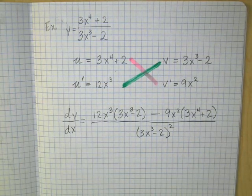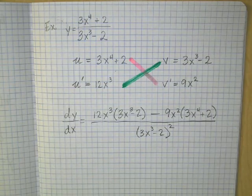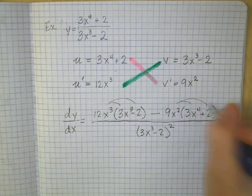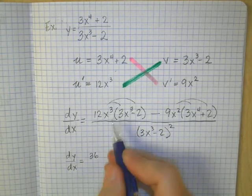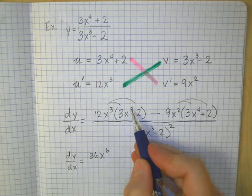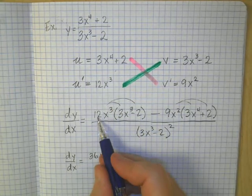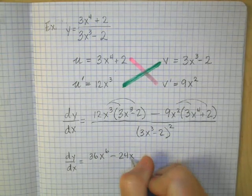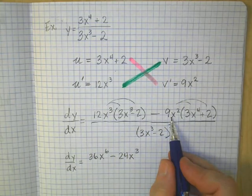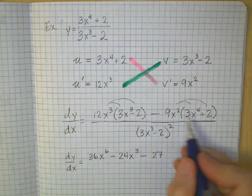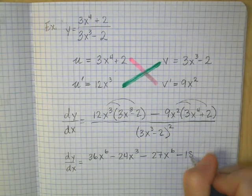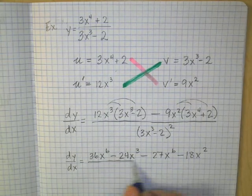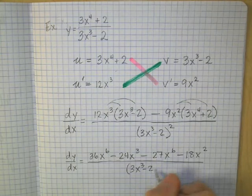Now we can simplify this — let's go ahead and multiply out and simplify. Distributing the numerator: dy/dx equals 12 times 3 is 36, x cubed times x cubed is x to the sixth. Then 12 times negative 2 is negative 24, keep x cubed. Over here, negative 9 times 3 is negative 27, x squared times x to the fourth is x to the sixth. Negative 9 times 2 is negative 18, keep x squared. All divided by (3x to the third minus 2) squared.